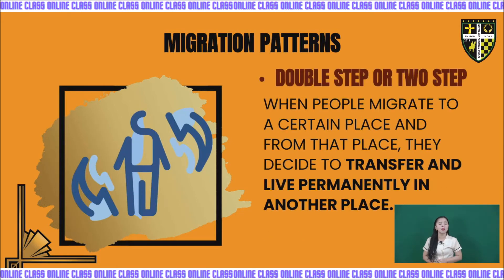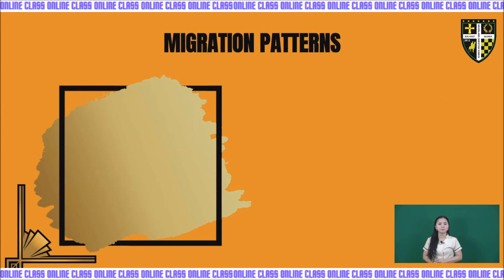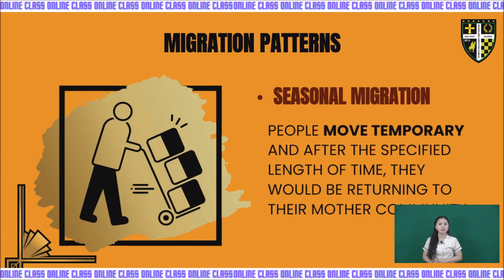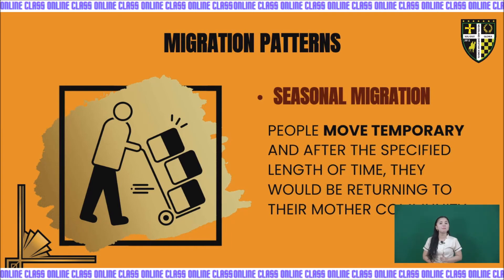Next, we have double-step or two-step migration, which is when people migrate to a certain place and from that place decide to transfer and live permanently in another place. A simple example is a person who changed their residence twice, excluding their place of origin. Next, we have seasonal migration, where people move temporarily and after a specified length of time they return to their home community.